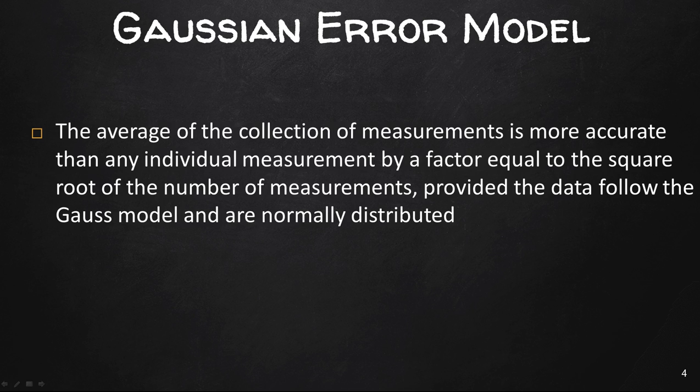The average of the collection of measurements is more accurate than any individual measurement by a factor equal to the square root of the number of measurements, provided the data follow the Gaussian model and are normally distributed. Don't worry, you're not going to do any calculations. You simply need to understand a collection of measurements is more accurate than any individual measurement.